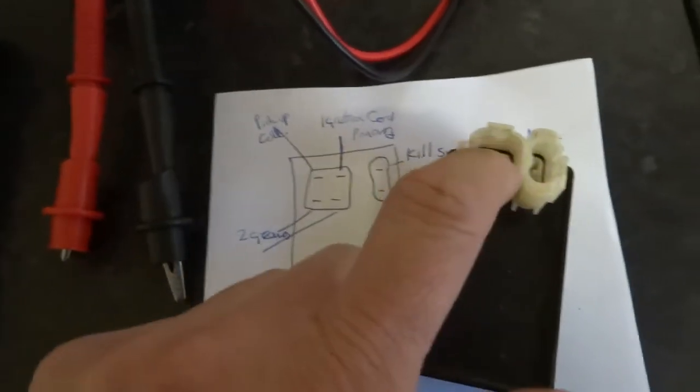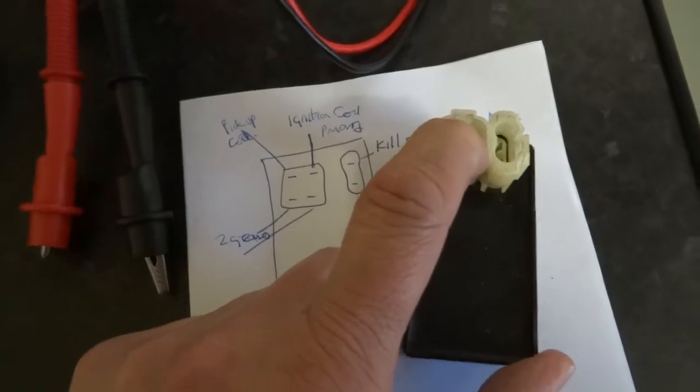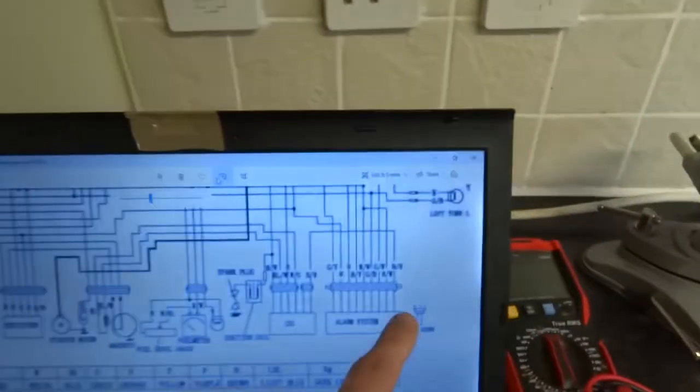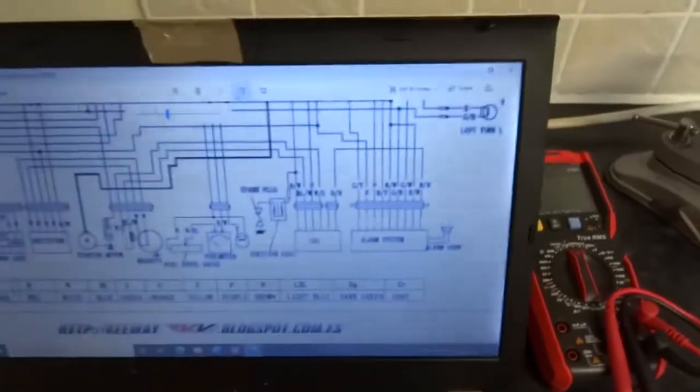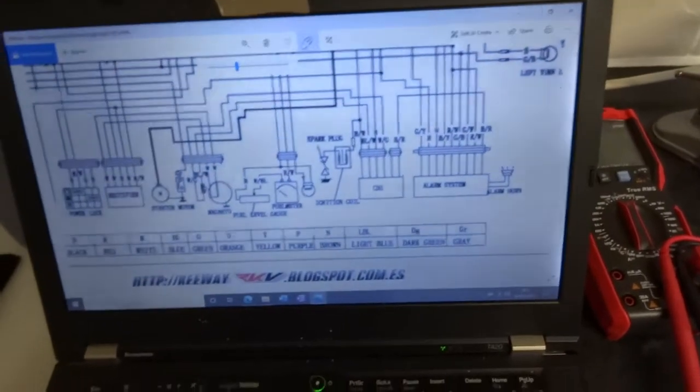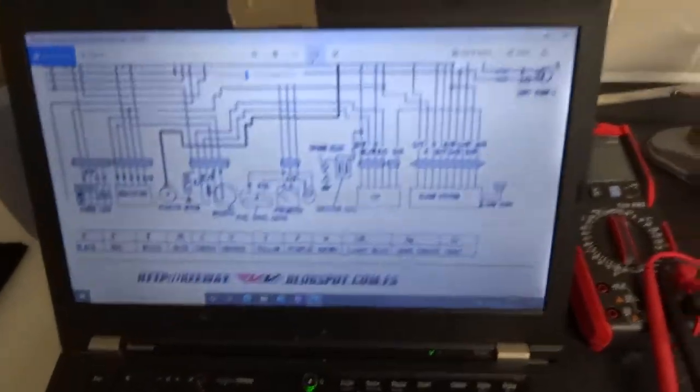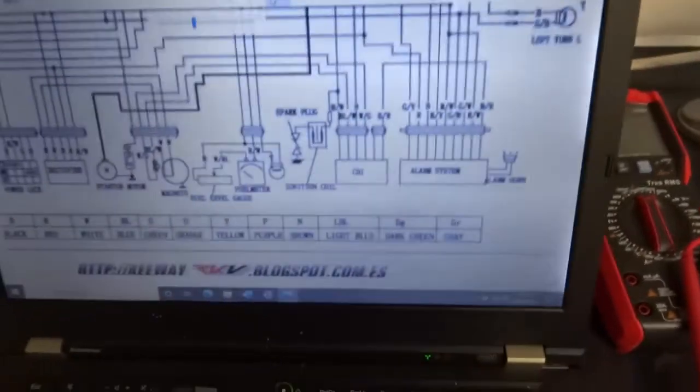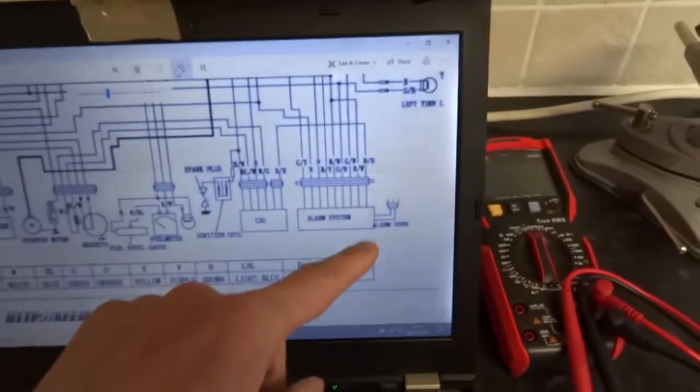But you can only test these for shorts anyway. On this, power through the alarm also has got your stand switch involved as well. So sometimes the kill switch might be linked in with your stand switch, but on this one it ain't - it goes to the alarm.